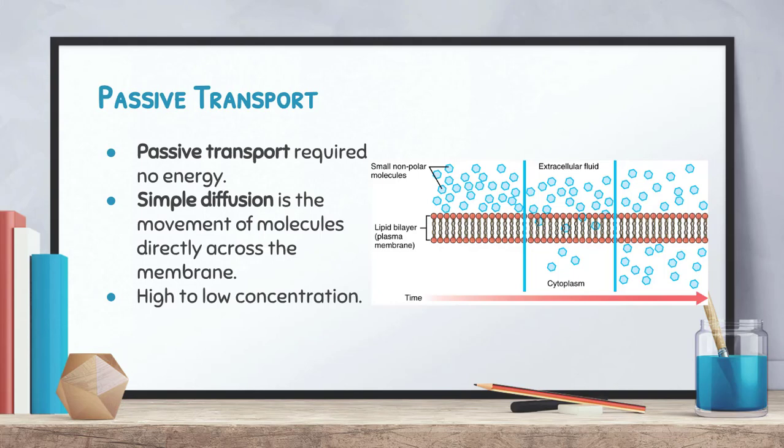The term passive means you just kind of sit there — you're being lazy. So passive transport requires no energy whatsoever. An example of passive transport is simple diffusion, where the movement of molecules is directly across the cell membrane. They do not require any type of proteins; they can just go right through the membrane.